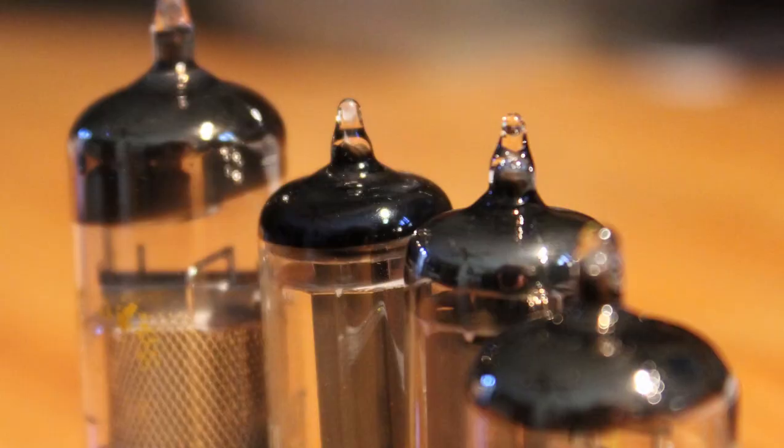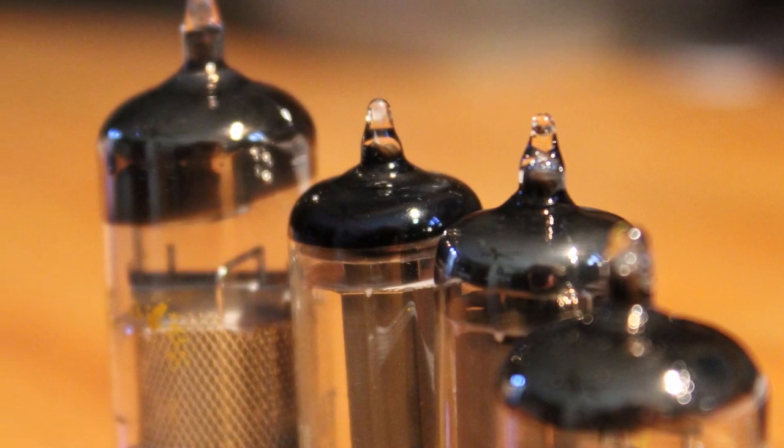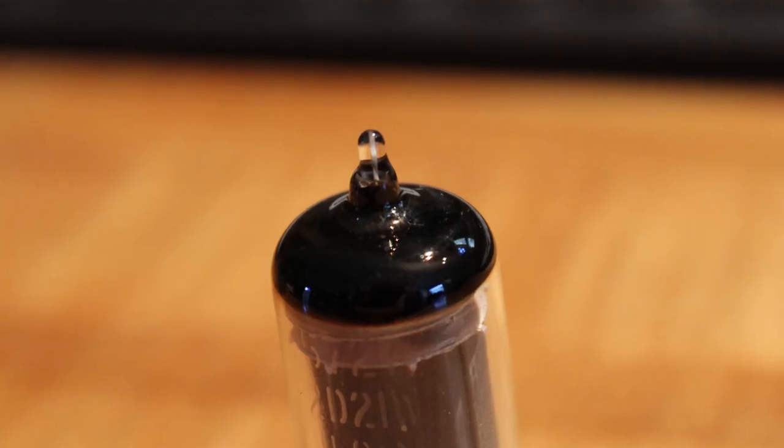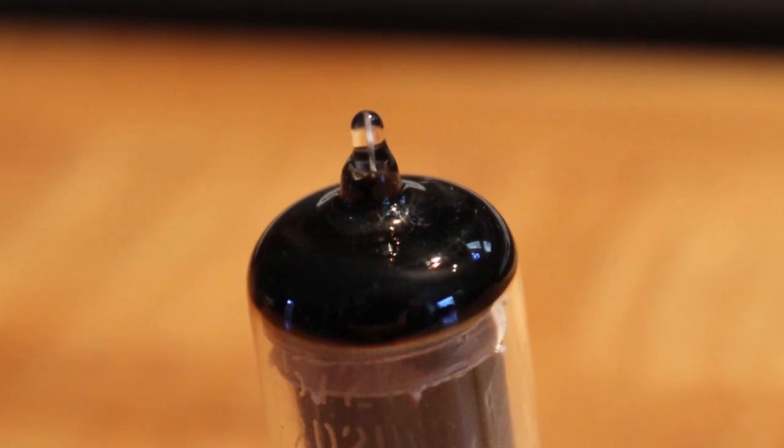So as I was cutting the tubes open there's a little silver spot at the top of all these tubes with the exception of the 1A5GT. And this is called the getter and its sole purpose is to kind of absorb any additional gases that may be off-gassing off of all of the materials inside the tube to prevent contamination and the tube dying an early death.